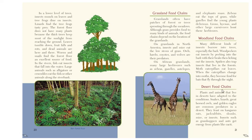Desert food chains. Plants and animals that live in deserts have adapted to the conditions. Snakes, lizards, great horned owls, and golden eagles are common predators in a desert. They feast on kangaroo rats, jackrabbits, skunks, mice, or insects. Insects such as grasshoppers and ants get energy from plants like cacti — that being the plural of cactus.